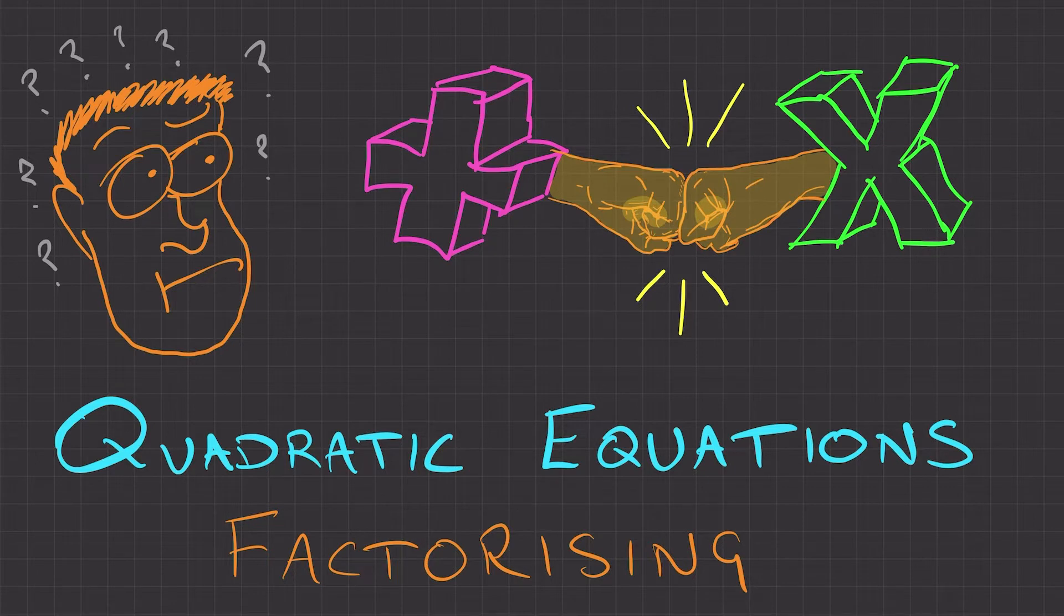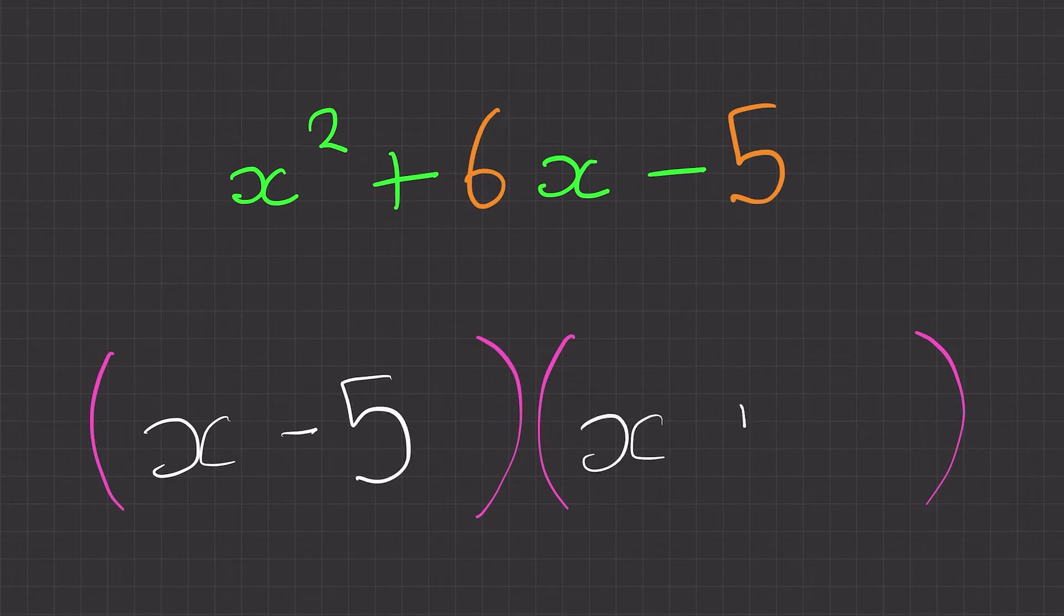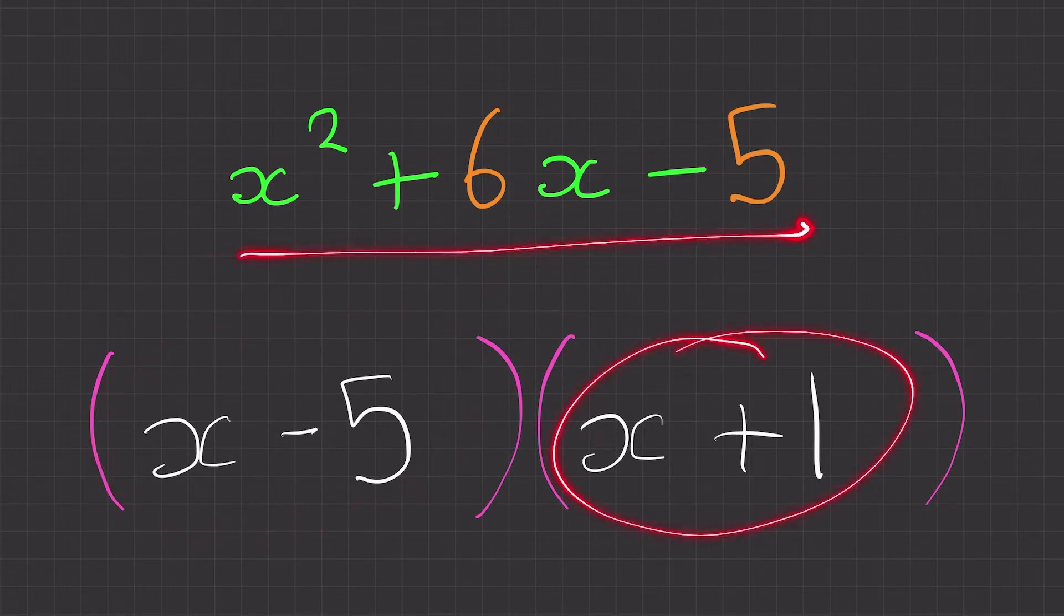Well, thinking about the word factor, factorising is taking out a factor from a number of an expression. So we've got our quadratic expression here. If we take out a factor of x minus 5, we're going to be left with x plus 1. So x minus 5 is a factor of this and x plus 1 is also a factor of this. So now I'll show you how to get there.